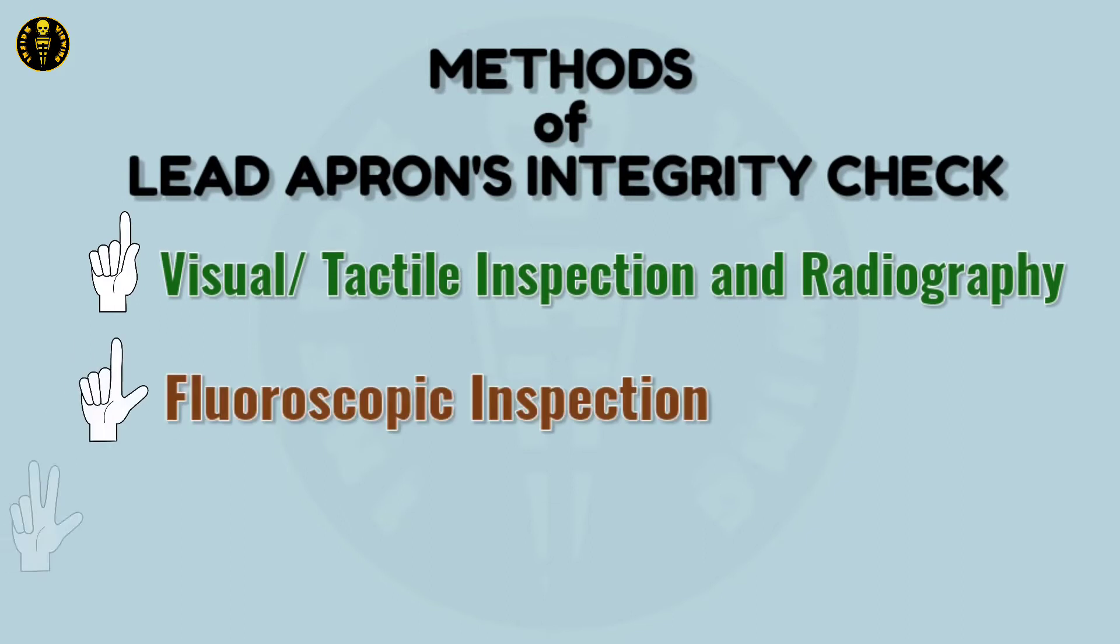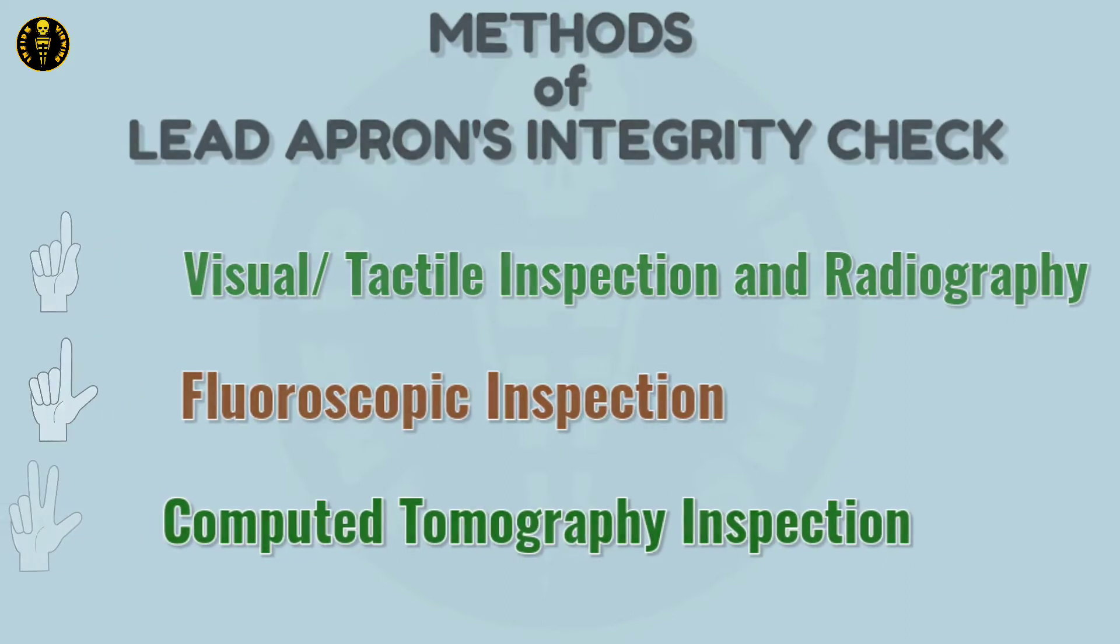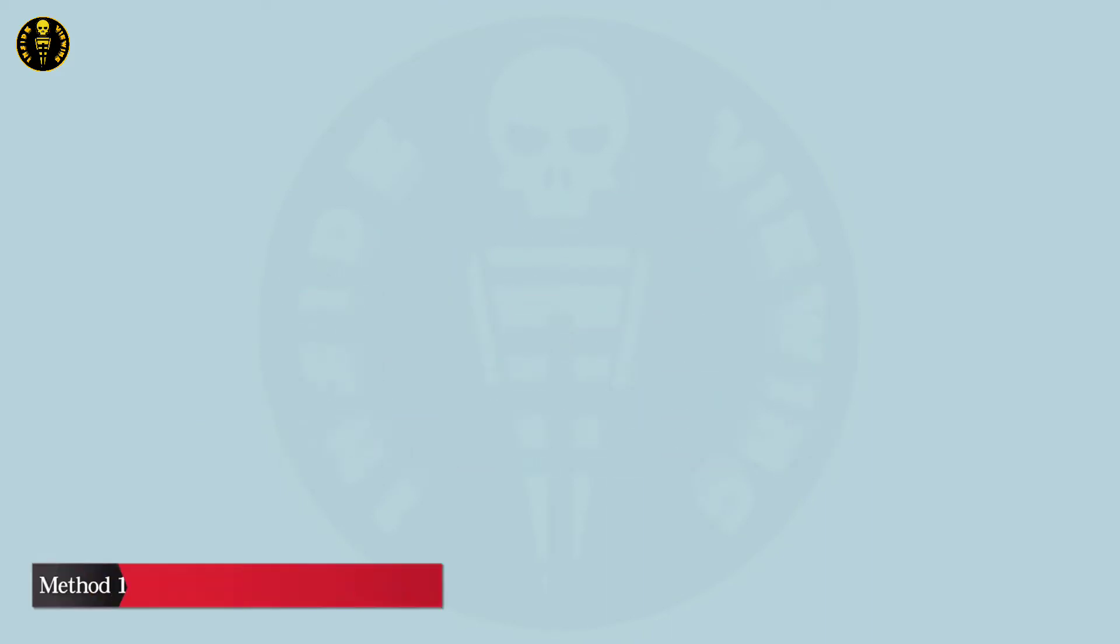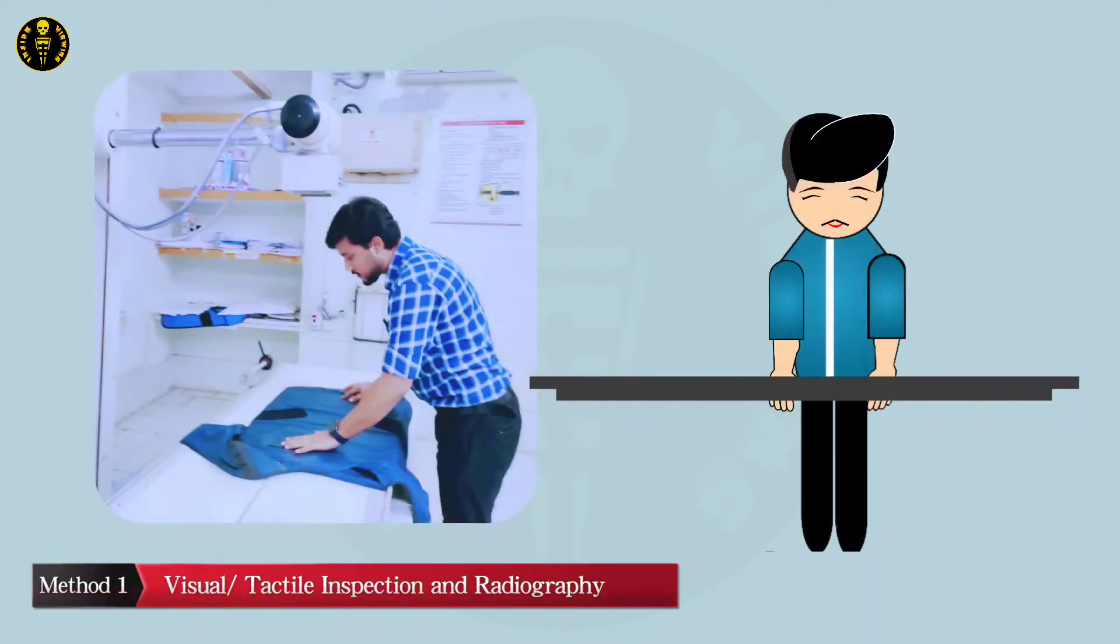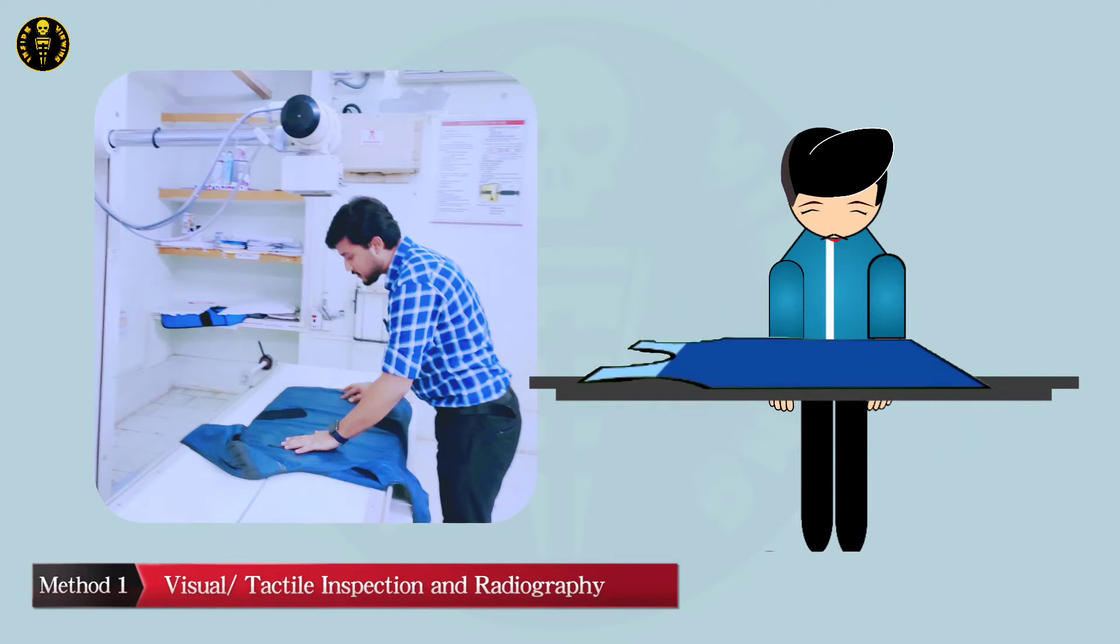Now I will tell you three simple methods to check the integrity of the lead apron or other protective garments. For visual inspection, lay out the apron on a clean flat surface and visually inspect for any tears, perforations, or imperfections.